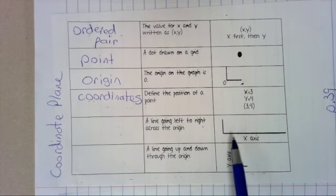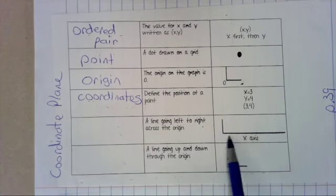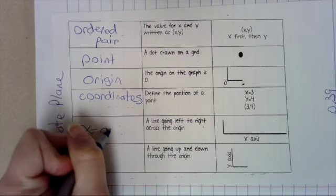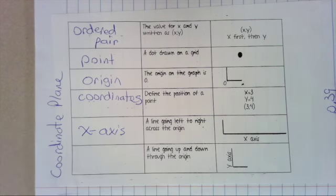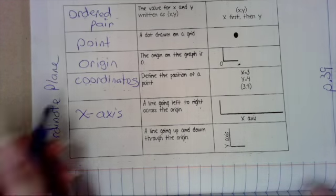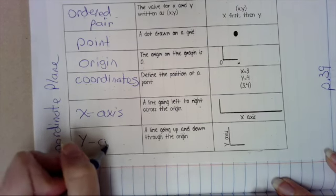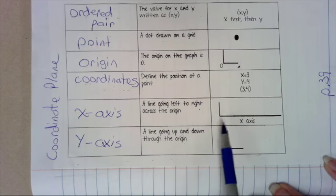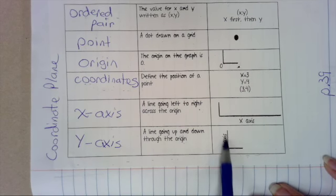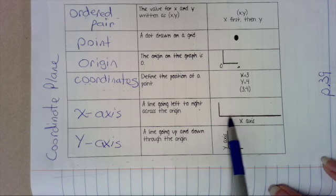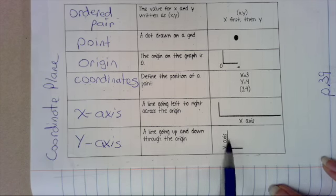The line that goes left and right across the origin is the X axis. And the line that goes up and down through the origin is the Y axis. And it is very important that you know X is left and right and Y is up and down.